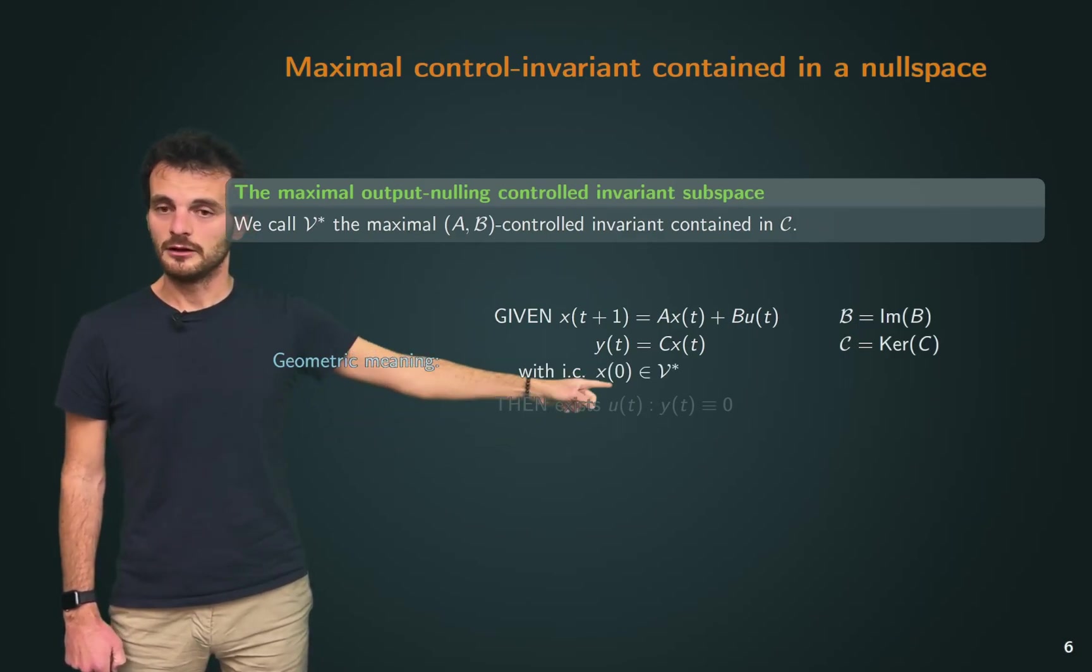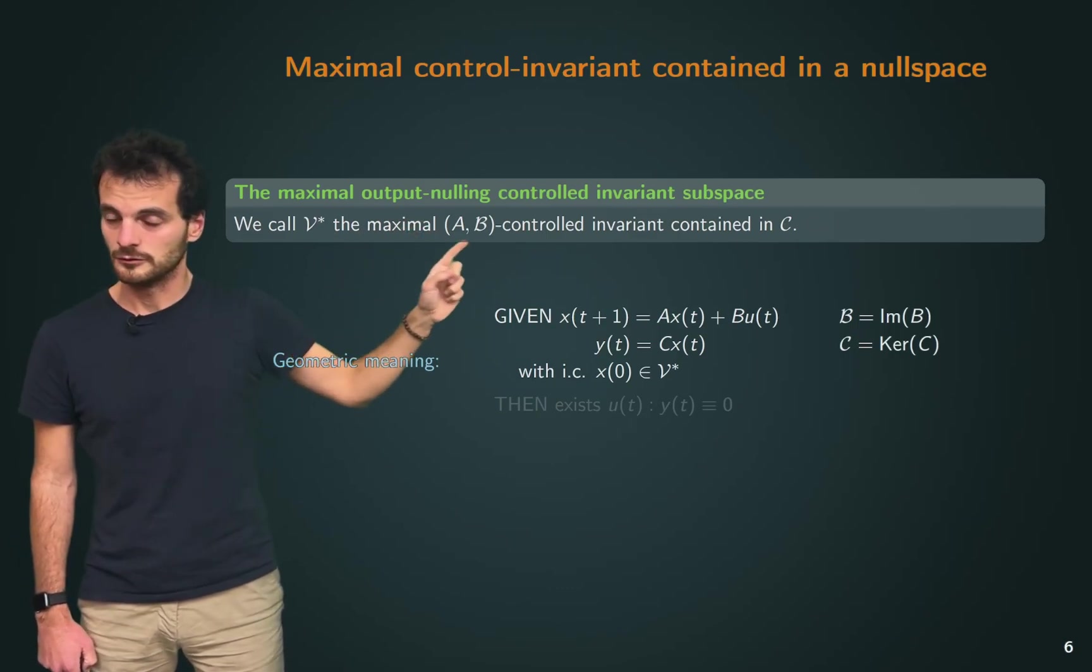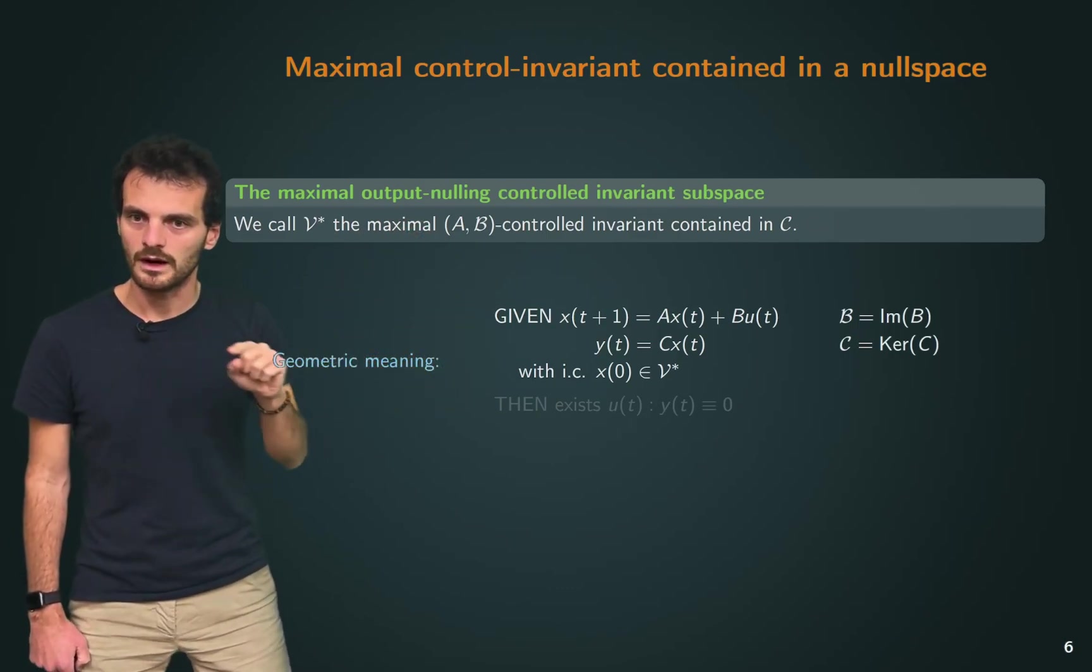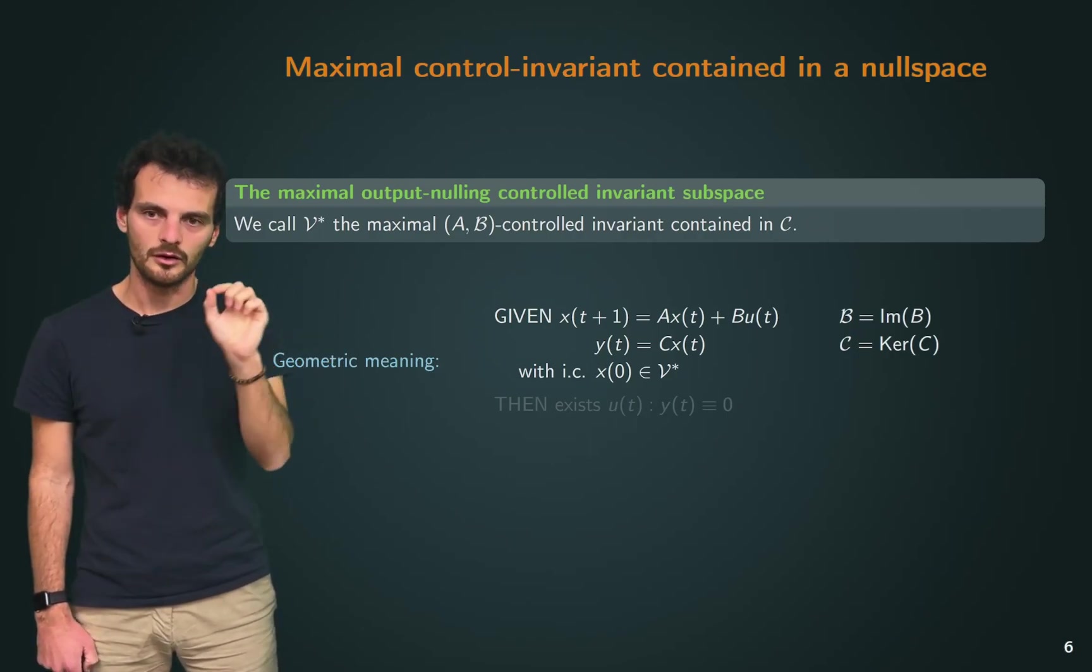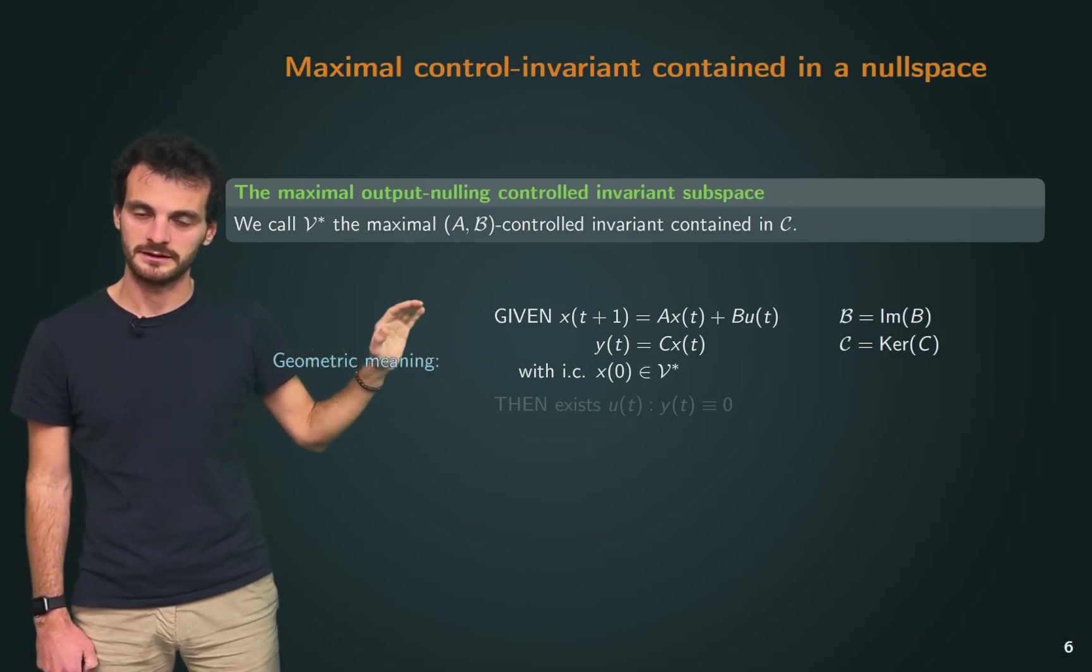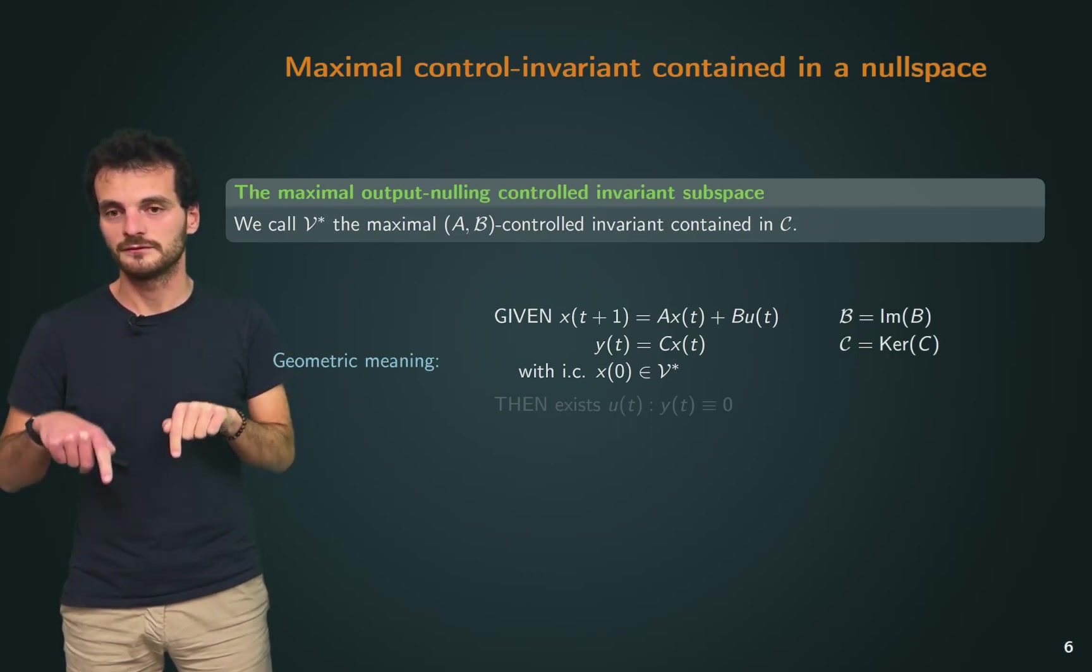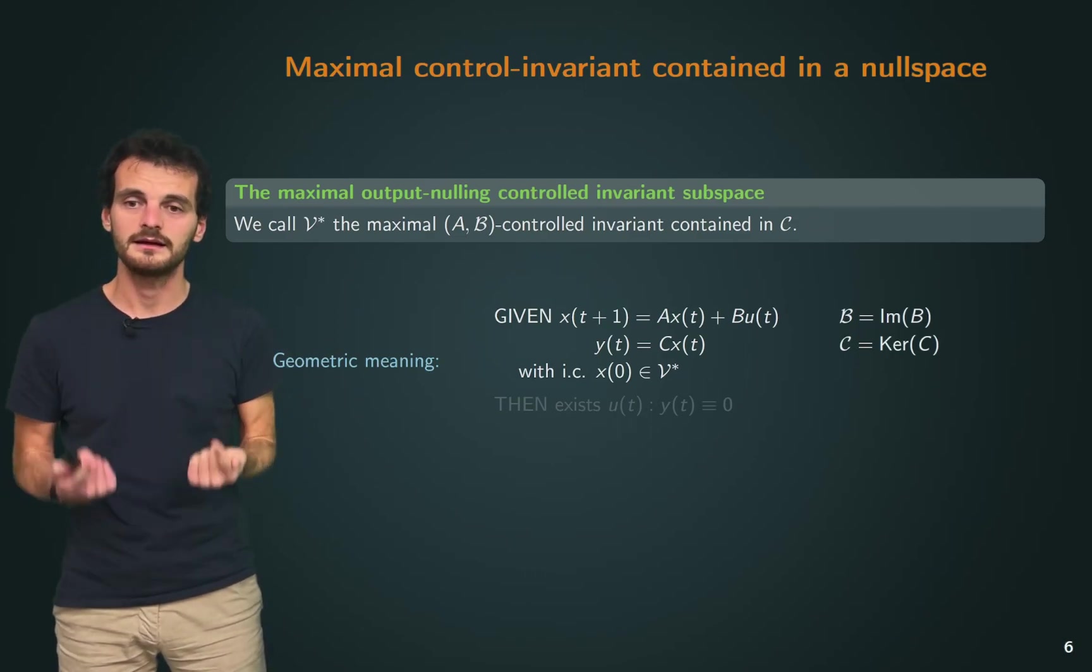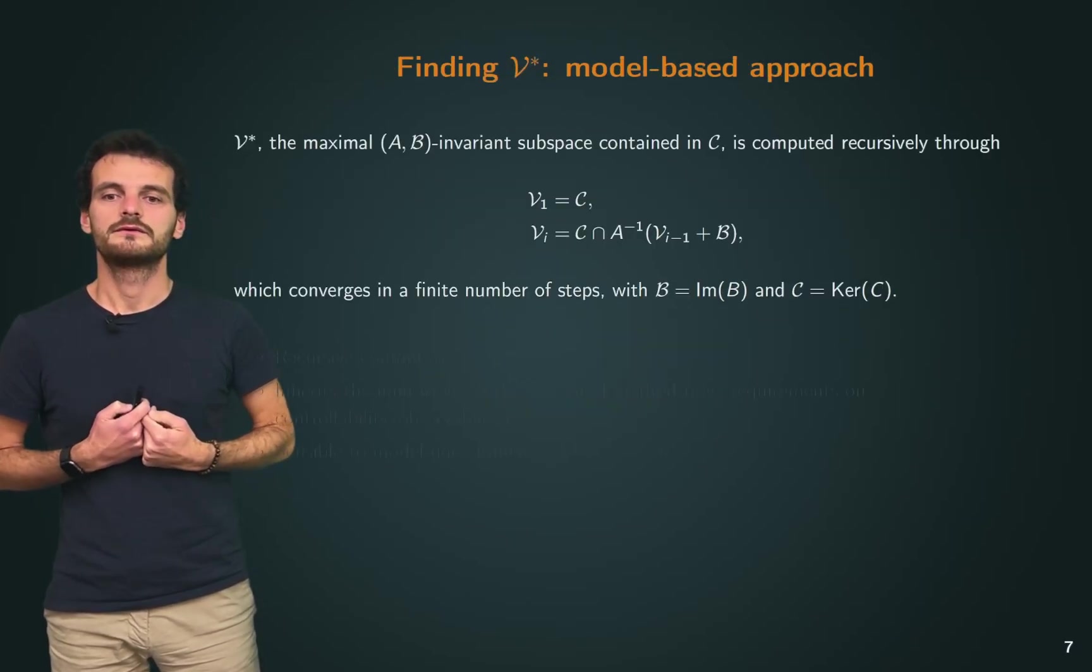If x_0 belongs to V*, then, since V* is a controlled invariant, then x_1 can also be contained in V*, x_2 will be contained in V*. We can always find an input that will keep our trajectory inside V*. But since V* is also contained in the null space of C, then the output is always going to be zero.